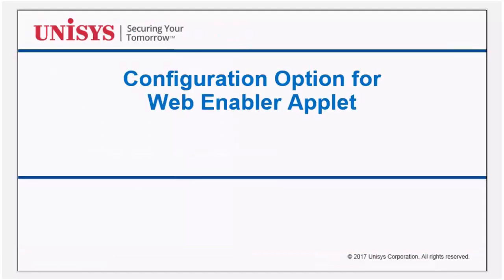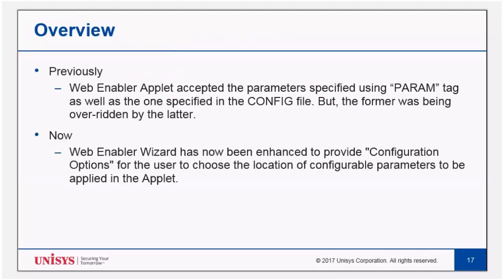Let's talk about the third enhancement: configuration option for WebEnabler Applet. Previously, WebEnabler Applet accepted parameters specified using the param tag as well as those specified in the config file, but the former was being overridden by the latter. With this enhancement, a new option has been added in the WebEnabler wizard, allowing an administrator to select the source for application configurable parameters to be applied in the applet.